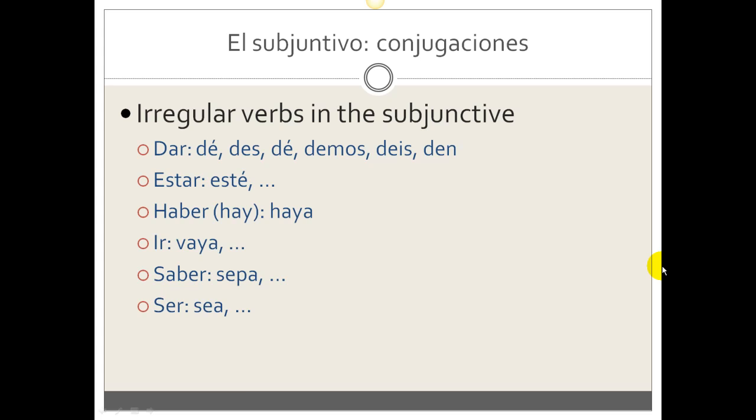Haber, which in the present tense is hay, there is or there are. The subjunctive is haya. Ir: vaya, vayas, vaya, etc. Saber: sepa, sepas, sepa, etc. And ser: sea, seas, sea, etc.